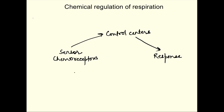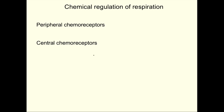In this video we will discuss chemoreceptors: what they are, where they are present, and how they respond to changes in partial pressure of oxygen, carbon dioxide, and hydrogen ion concentration. There are two types of chemoreceptors based on location: peripheral chemoreceptors and central chemoreceptors.